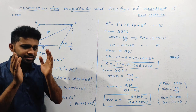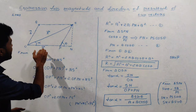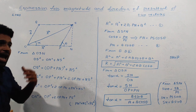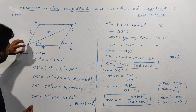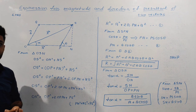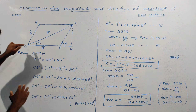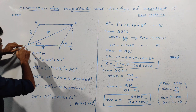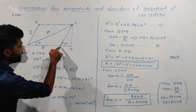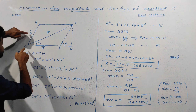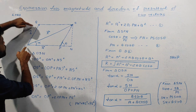Consider two vectors, Vector A and Vector B, acting at point O. Vector A is represented by OP and Vector B is represented by OQ.